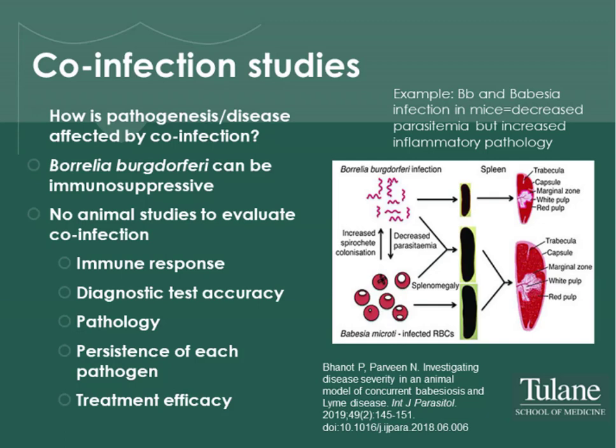It is extremely important to consider how bacteria are presented in vivo to test therapeutic efficacy. We also don't know how pathogenesis and disease are affected by co-infection. We know that Borrelia burgdorferi can be immunosuppressive, yet there have been no animal studies evaluating co-infection in terms of how it affects the immune response, diagnostic test accuracy, pathology, persistence of each pathogen, and treatment efficacy. An example using Borrelia and Babesia to co-infect mice showed that while Babesia parasitemia decreased, the inflammatory pathology associated with Borrelia infection was significantly increased — suggesting we may see a similar effect in Bartonella and Borrelia co-infection.